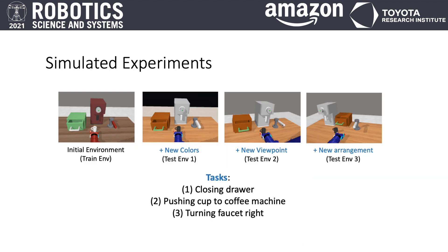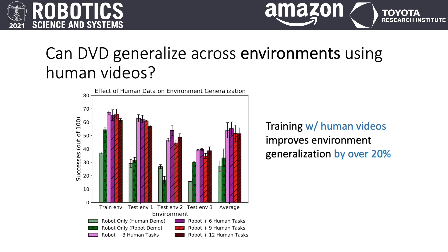One of our core hypotheses is that the use of diverse human data can improve the robot's ability to generalize to new environments and tasks. To test this hypothesis, first we consider environment generalization. We train DVD on in-the-wild human videos and robot videos of three target tasks from the initial training environment, and measure task performance across three unseen environments that are progressively more difficult. We find that training using human videos, shown in the purple and red bars, improves generalization significantly compared to only using robot data, shown in the green bars.